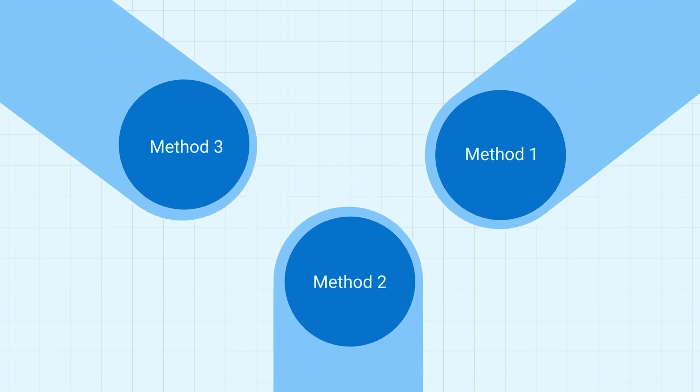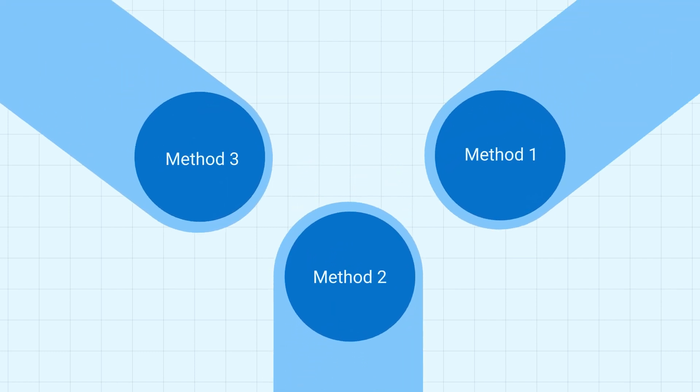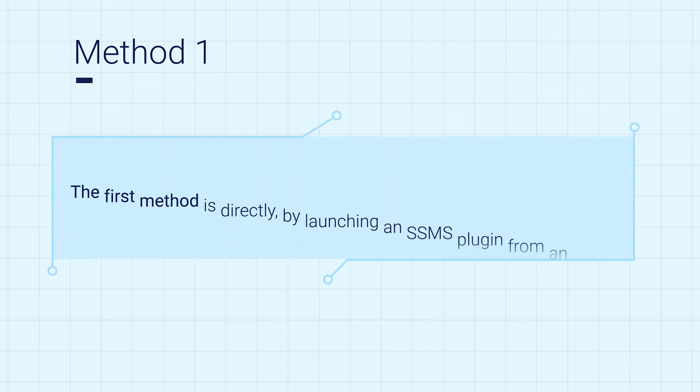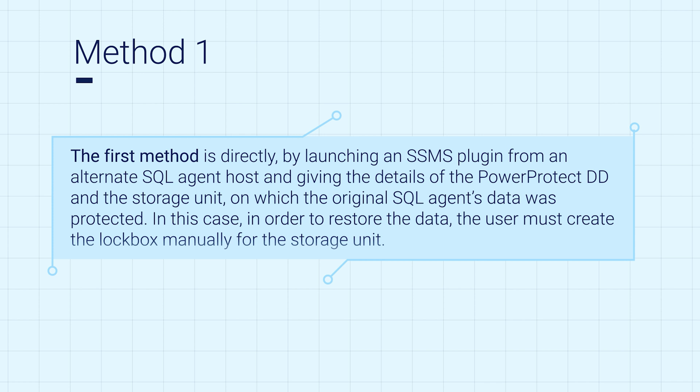In this video, we are demonstrating three methods for restoring assets from the original SQL Server. The first method is directly, by launching an SSMS plugin from an alternate SQL agent host and giving the details of the PowerProtect DD and the storage unit on which the original SQL agent's data was protected. In this case, in order to restore the data, the user must create the lockbox manually for the storage unit.